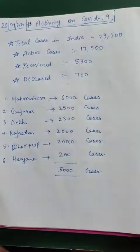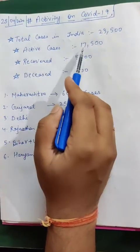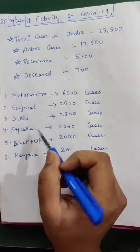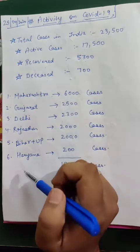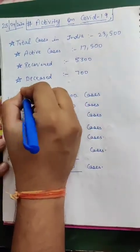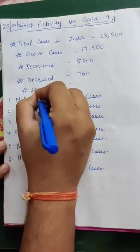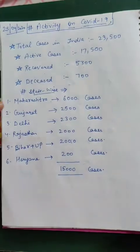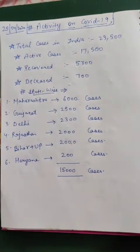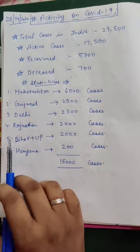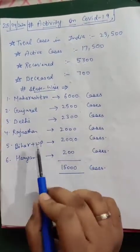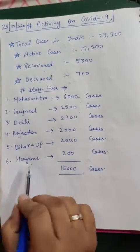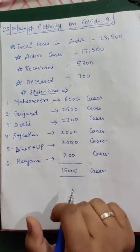Basically there are around 23,500 cases in India, of which active cases are 17,500, recovered are 5,300, and deceased — those who lost their lives — are around 700 people. Now let's see some state-wise figures: Maharashtra has around 6,000 cases, Gujarat 2,500 cases, Delhi 2,300 cases, Rajasthan 2,000 cases, Bihar and UP combined around 2,000 cases, and Haryana, where you are living, has around 200 cases.